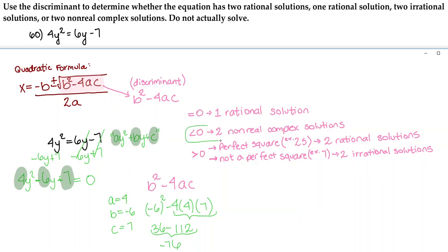Negative 76 is a negative number, therefore it is less than 0. So we are going to have two non-real complex solutions. And that's our answer.